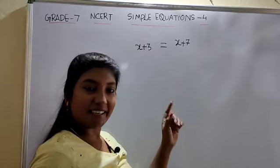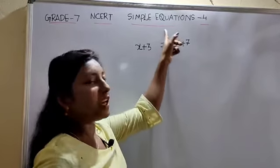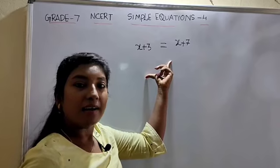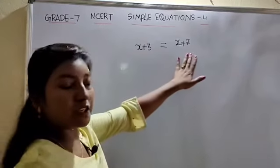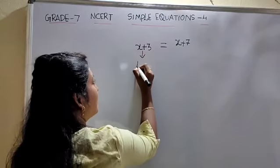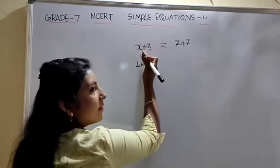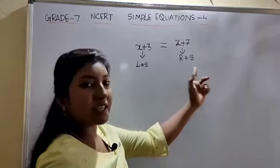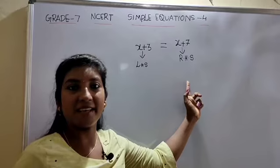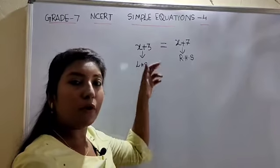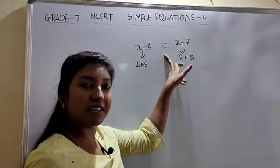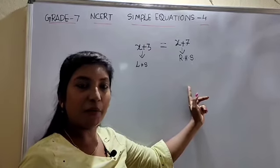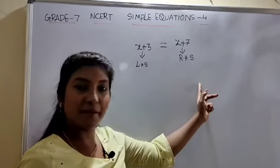What is an equation? In an equation, there will be an equals to sign. An equation states that two expressions are equal. In an equation, we have two sides: the left-hand side of equals to and the right-hand side of equals to. The value of the expression on the left-hand side is equal to the value of the expression on the right-hand side. Let us see this with an example.